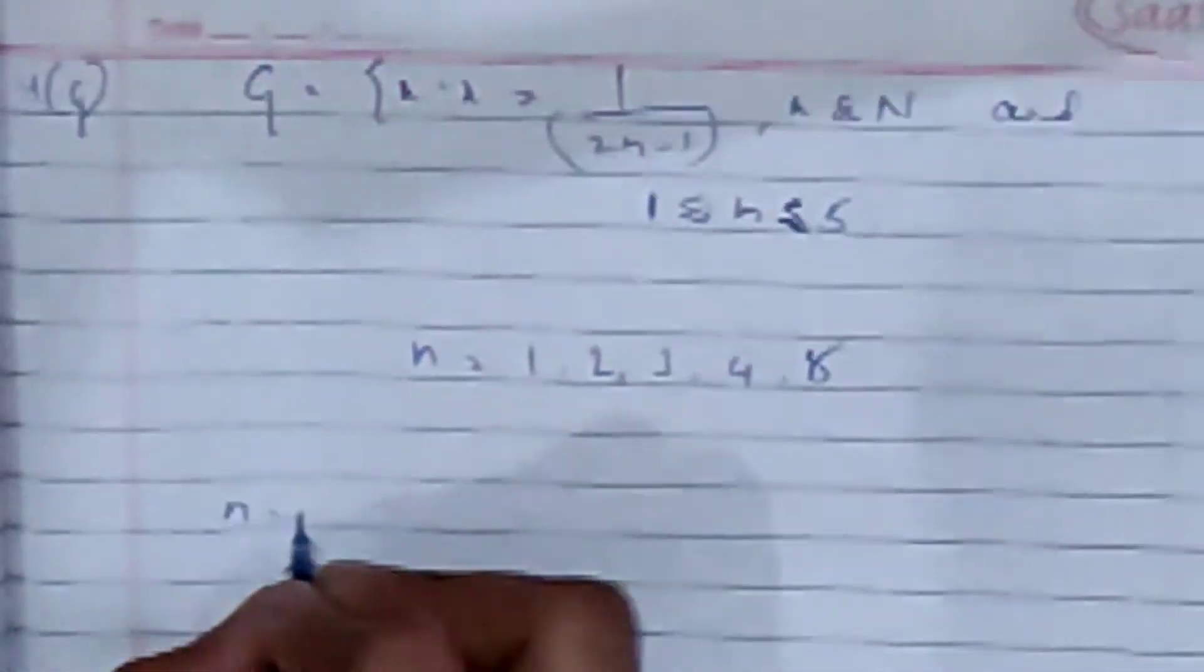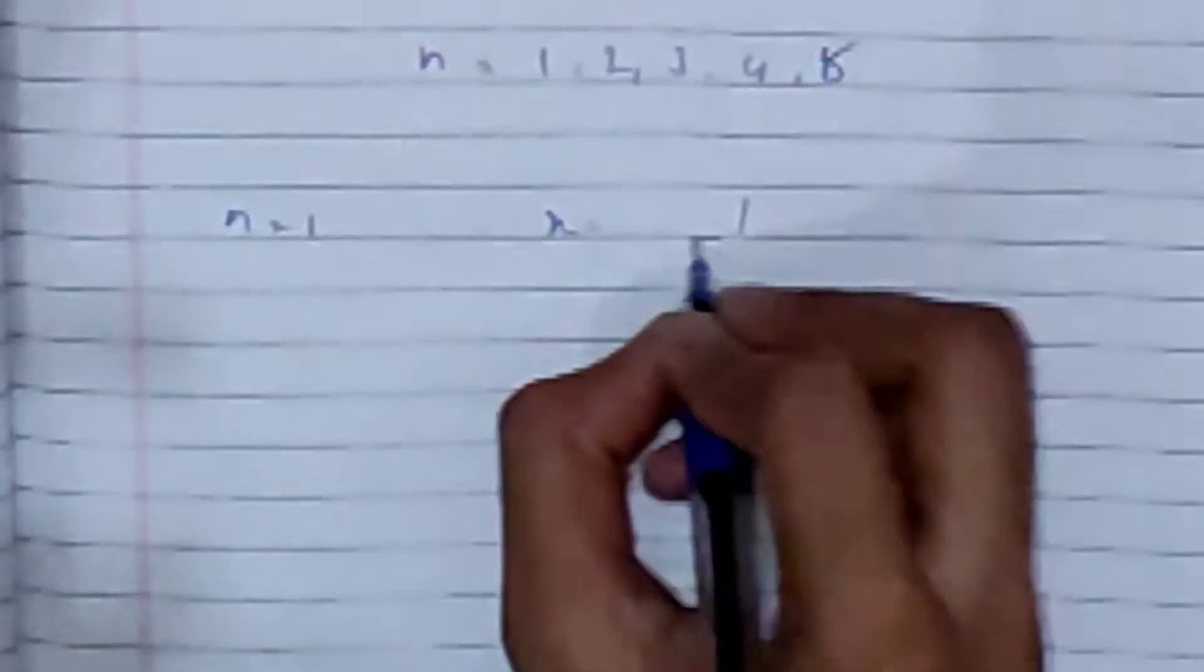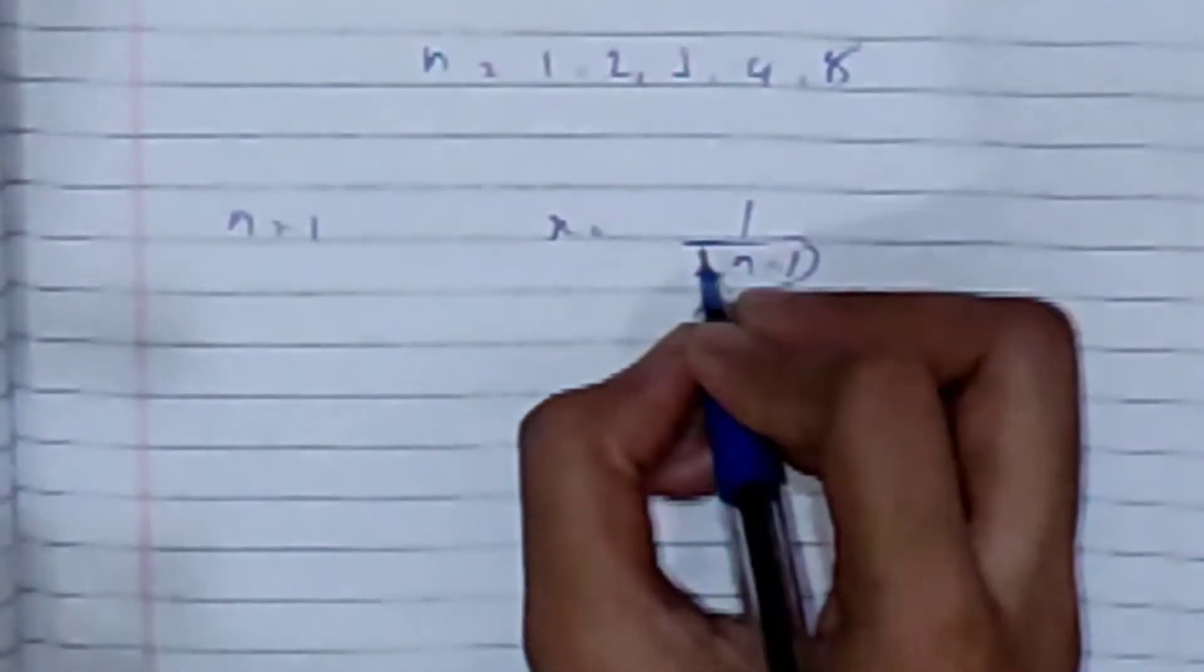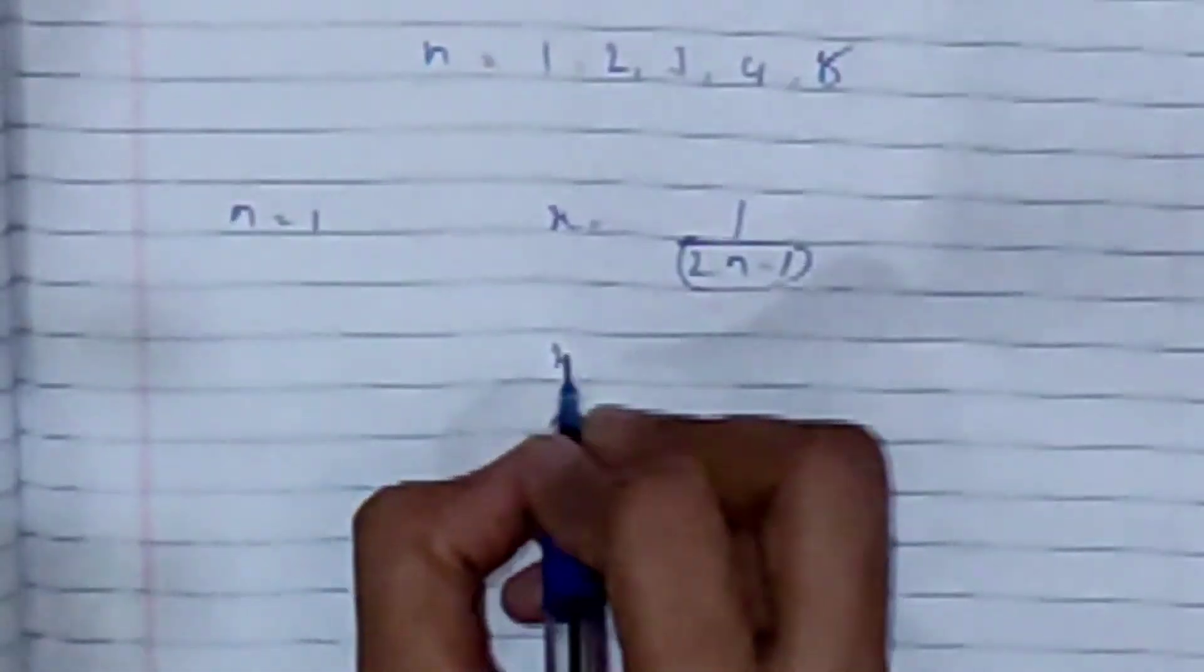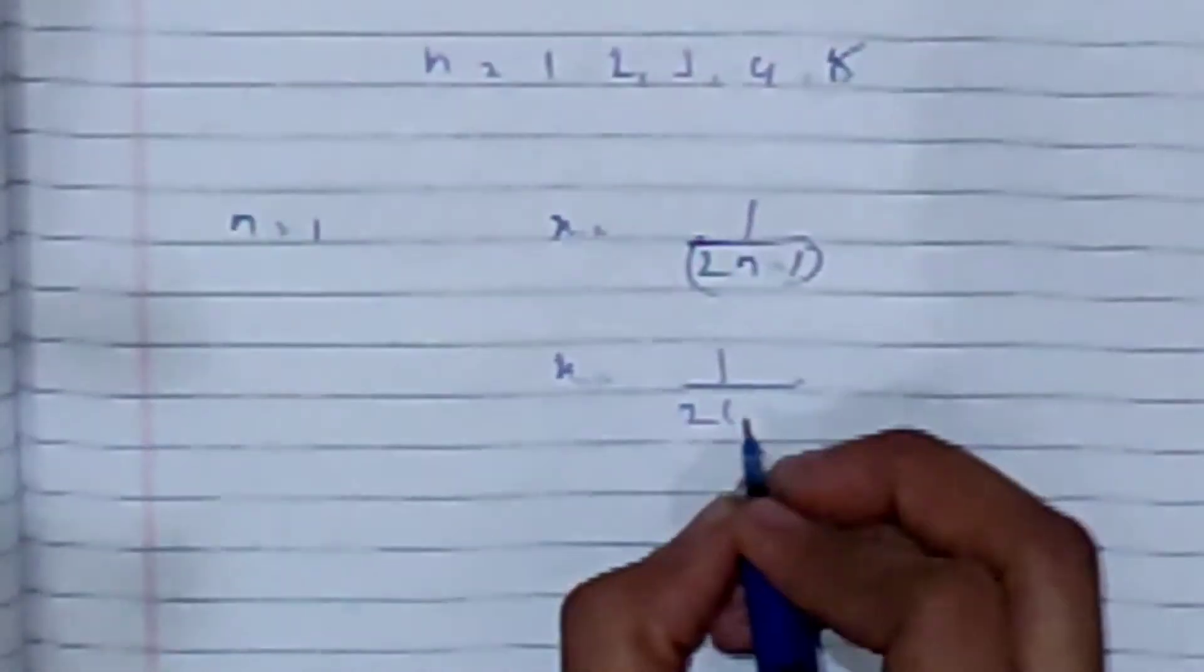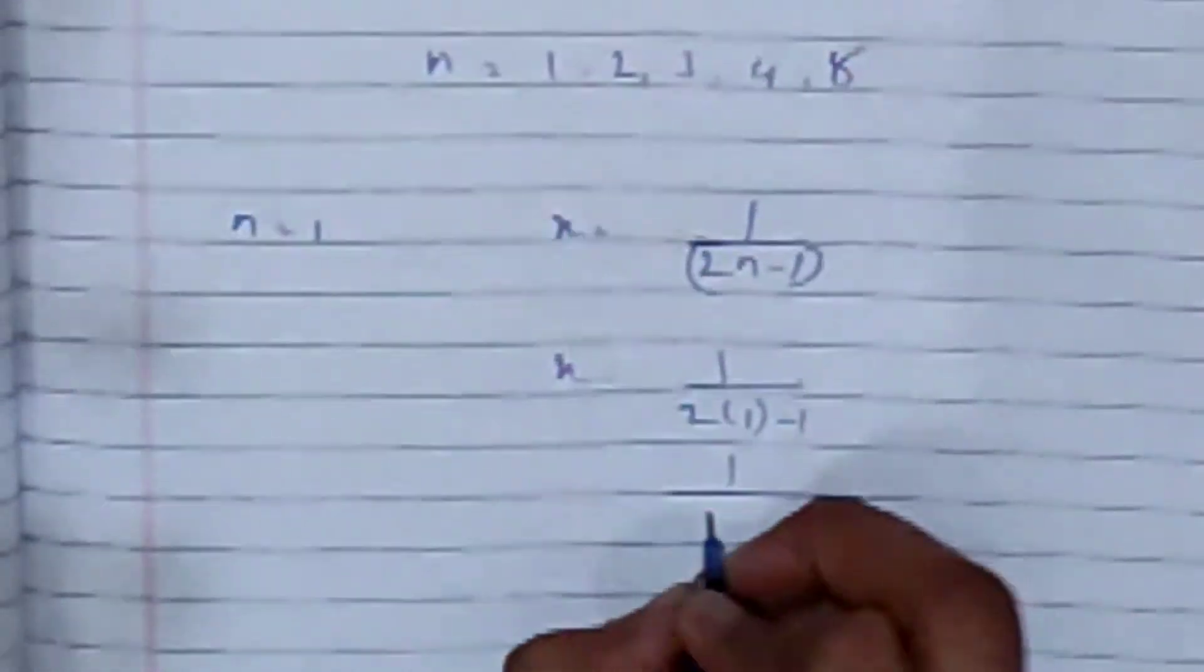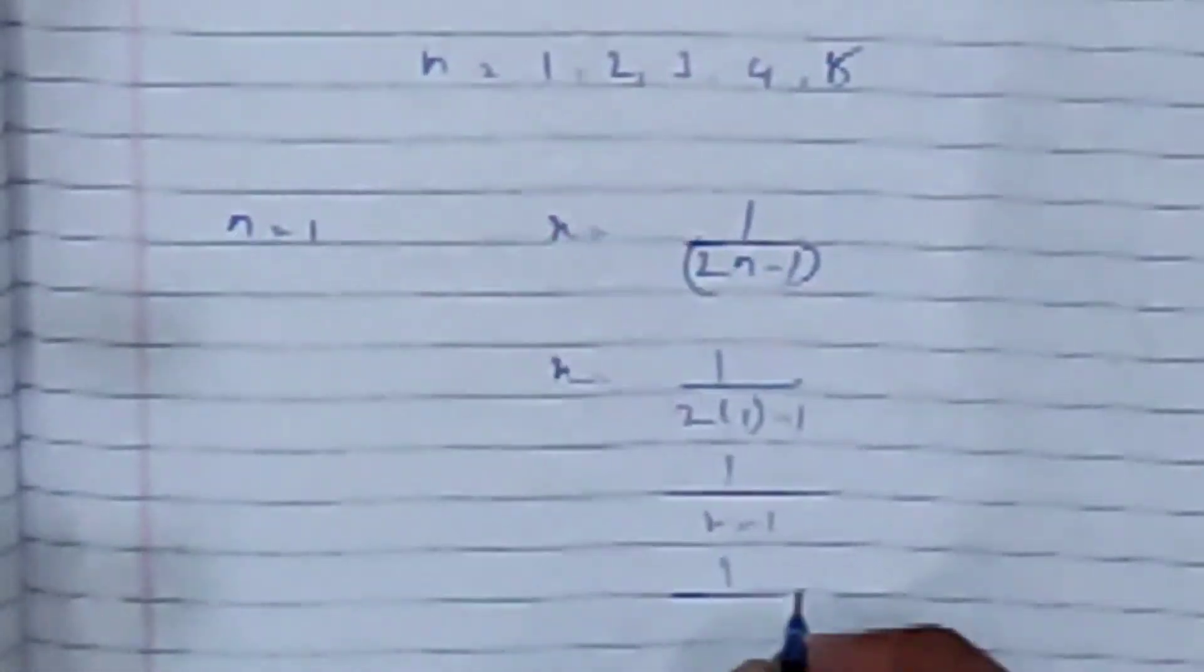First we put n is equal to 1. X is equal to 1 by 2n minus 1. We put 1: 1 by 2 times 1 minus 1, 1 by 2 minus 1 equals 1.